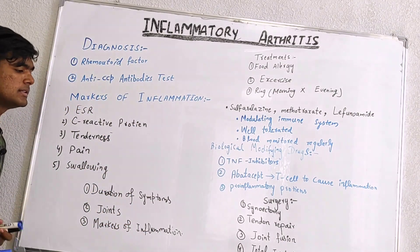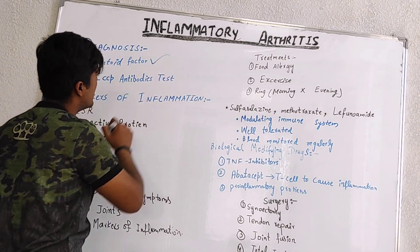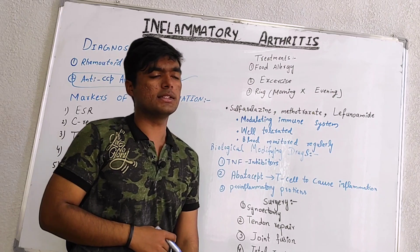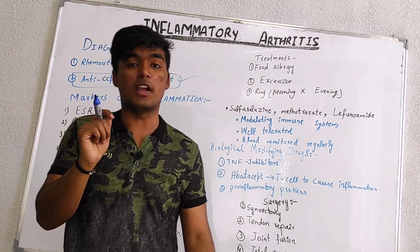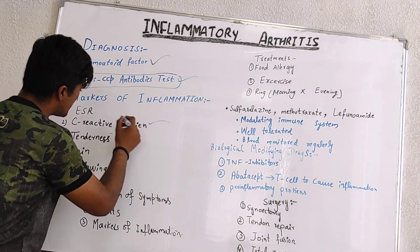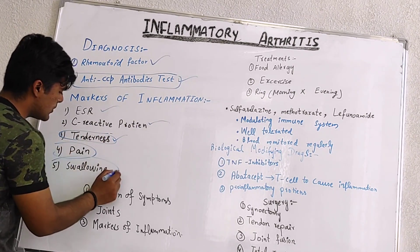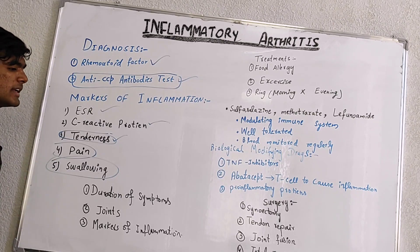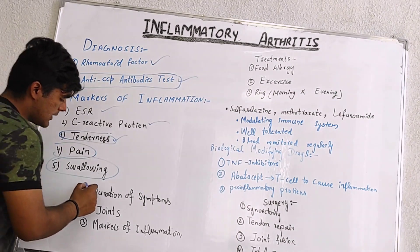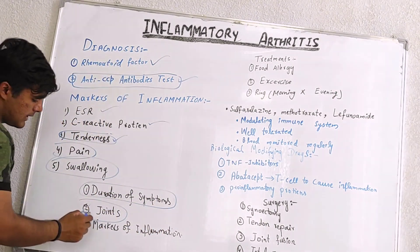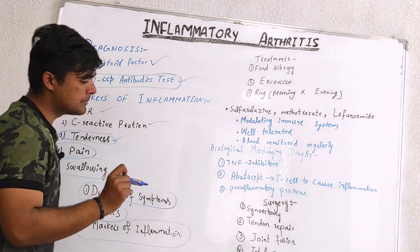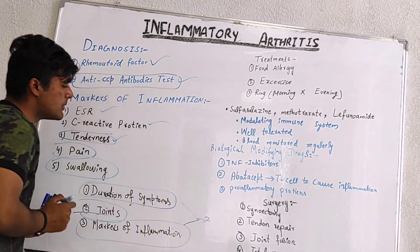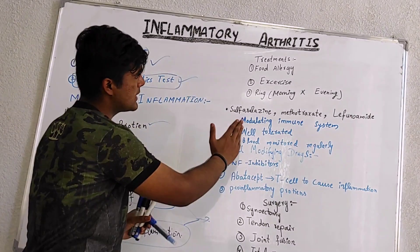For diagnosis, we check Rheumatoid factors and the anti-CCP antibody test, which is a key test. If the anti-CCP antibodies test is positive, we have a 99% chance of confirming inflammatory arthritis. Markers include C-reactive protein, ESR, tenderness showing pain and swelling — these are markers of inflammation. Before making a diagnosis, we check three main points: duration of symptoms, joints involved, and the markers of inflammation. After checking these, we make a final conclusion and move towards tests and then treatment.